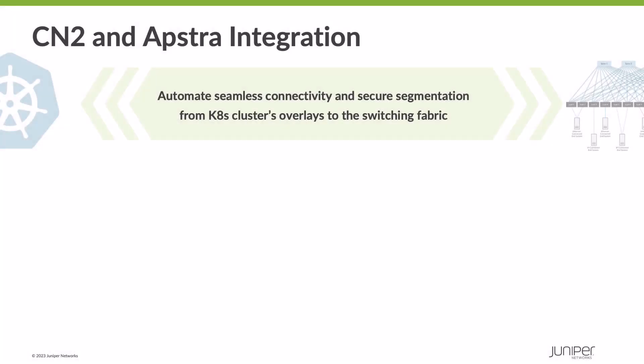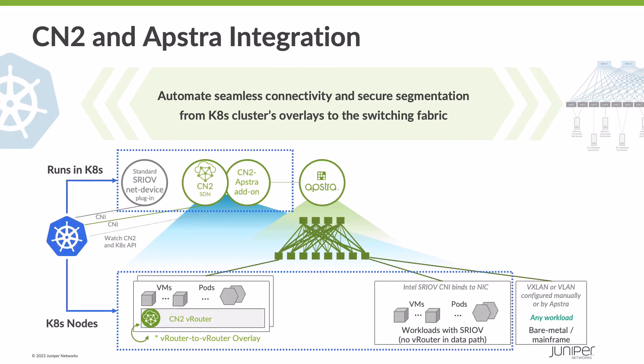Welcome to this demo series on Juniper CN2 and AppStra. In this new integration, you'll see how we've seamlessly extended connectivity and secure segmentation from Kubernetes clusters into the physical switching fabric. In this demo series, you'll see how it works in quick video demonstrations, and in this introduction, we'll talk about some of the use cases.